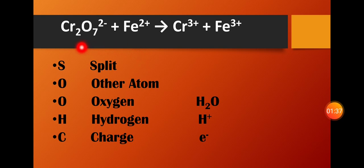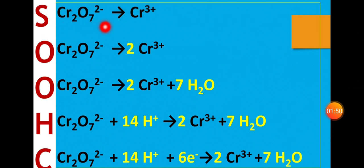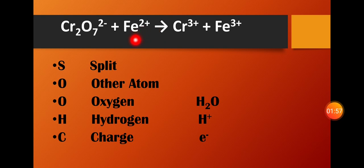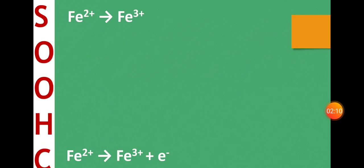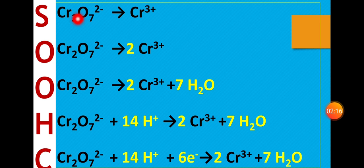Now let's see. We split this into half-reactions. We will see Cr2O7 2- to Cr3+. That's the first half-reaction: Cr2O7 2- → Cr3+.